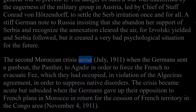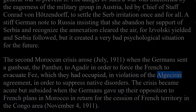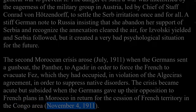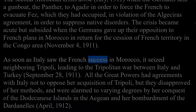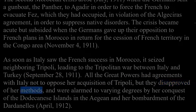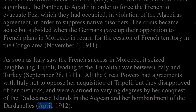The second Moroccan crisis arose in July 1911 when the Germans sent a gunboat, the Panther, to Agadir to force the French to evacuate Fez, which they had occupied in violation of the Algeciras agreement. The crisis subsided when the Germans gave up their opposition to French plans in Morocco in return for cession of French territory in the Congo area, November 4, 1911. As soon as Italy saw the French success in Morocco, it seized neighbouring Tripoli, leading to the Tripolitan War between Italy and Turkey, September 28, 1911. The great powers disapproved of Italy's methods and were alarmed by her conquest of the Dodecanese Islands and her bombardment of the Dardanelles in April 1912.